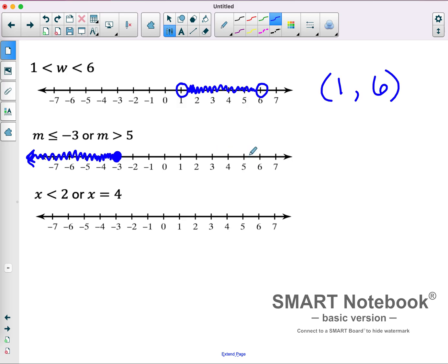But we also have the values that are bigger than 5. M is greater than 5. So, I'm going to find 5. It's not included. And we're going to shade to the right.